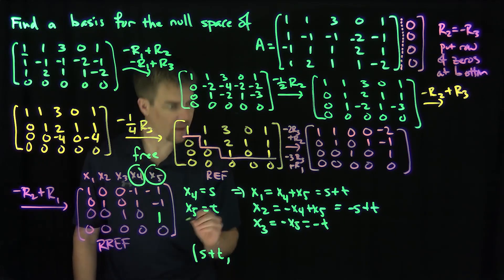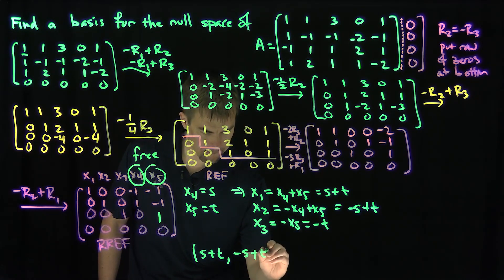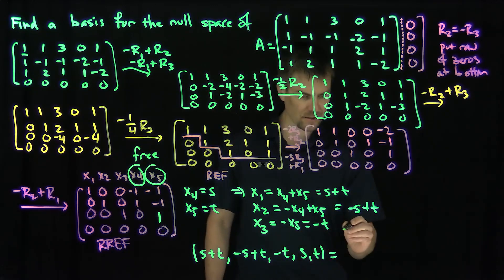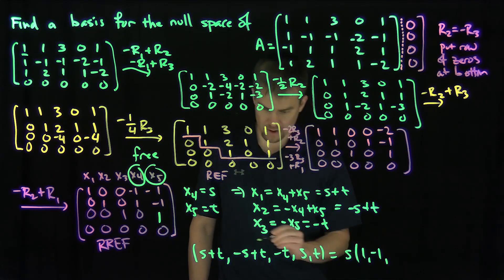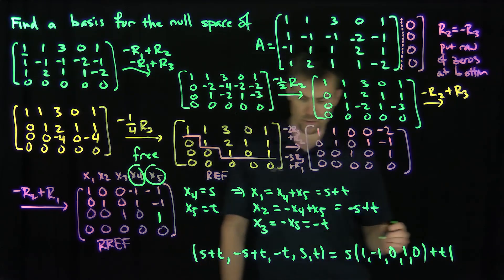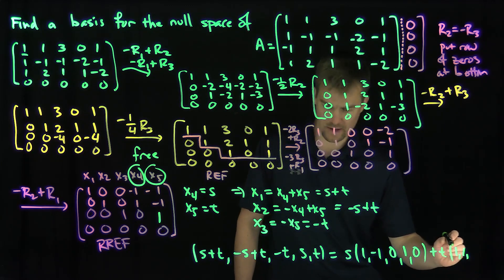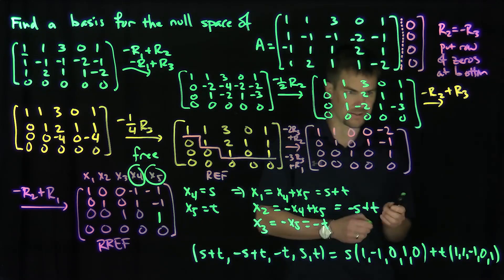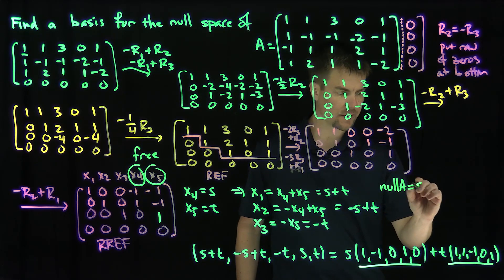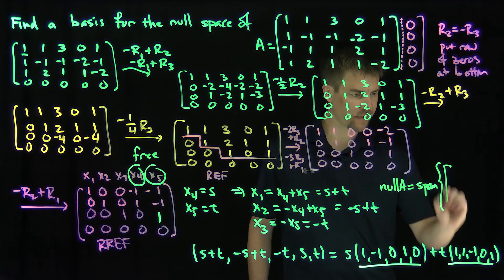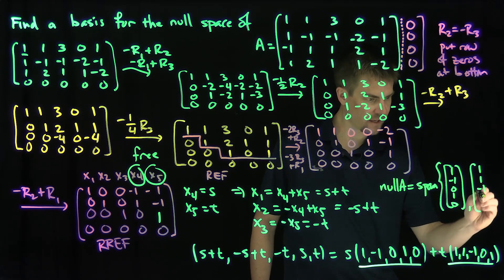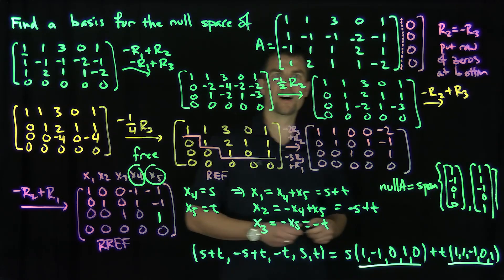So we can write this as: x1 = s + t, x2 = negative s + t, x3 = negative t, x4 = s, x5 = t. Factoring out s and t, we get s times (1, negative 1, 0, 1, 0) plus t times (1, 1, negative 1, 0, 1). Therefore the basis of the null space of A consists of these two vectors: (1, negative 1, 0, 1, 0) and (1, 1, negative 1, 0, 1). This is a two-dimensional null space. Thank you very much.